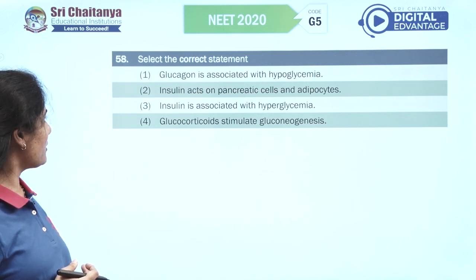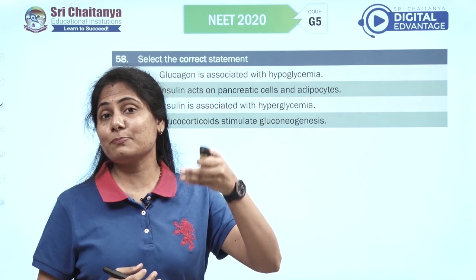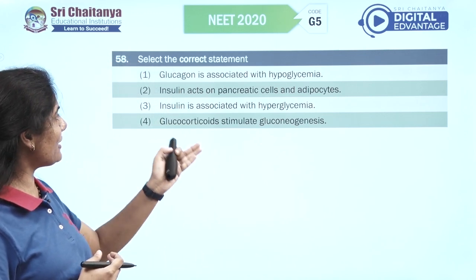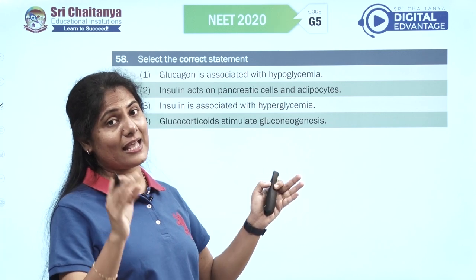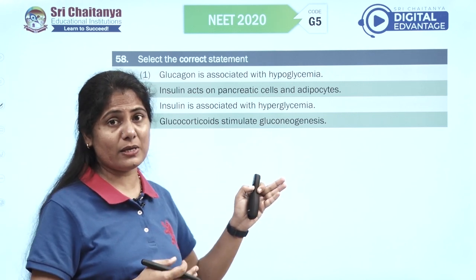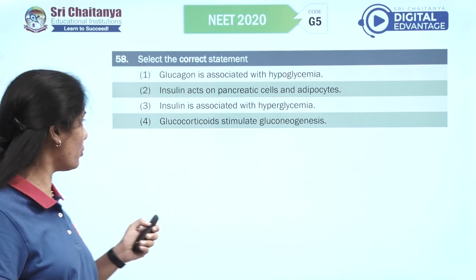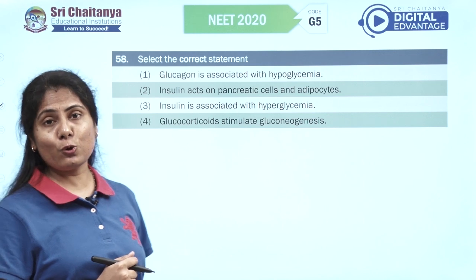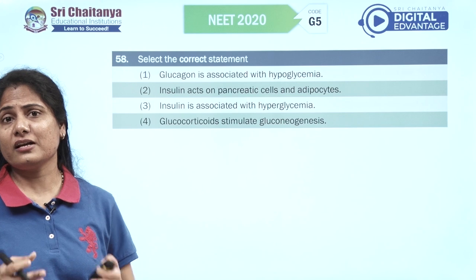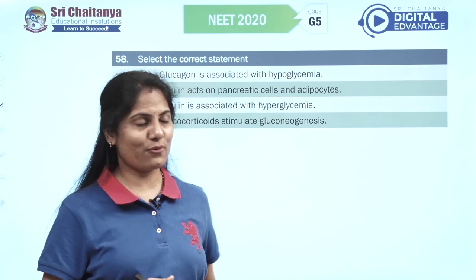Select the correct statement. Glucagon is associated with hypoglycemia — recall, it's actually hyperglycemia. Insulin acts on pancreatic cells and adipocytes — cleverly given, it actually acts on hepatic cells. Insulin is associated with hyperglycemia — no, it reduces glucose levels, so it's a hypoglycemic hormone. Glucocorticoids stimulate gluconeogenesis — that's right, they make glucose from non-carbohydrate sources. So the fourth option is your right option.